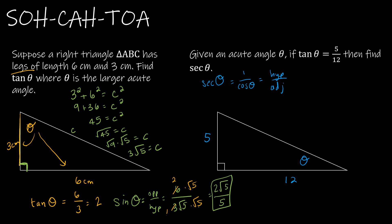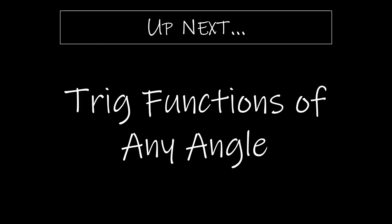5 squared plus 12 squared equals c squared. 25 plus 144 equals c squared. 169 equals c squared. So c is 13. Now I can find secant very easily. The hypotenuse is 13, the adjacent side is 12, so secant is 13 over 12. Coming up next, we'll take a look at trig functions of any angle.